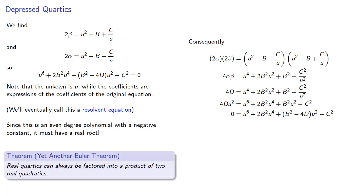And consequently, Euler concluded, real quartics can always be factored into a product of two real quadratics.